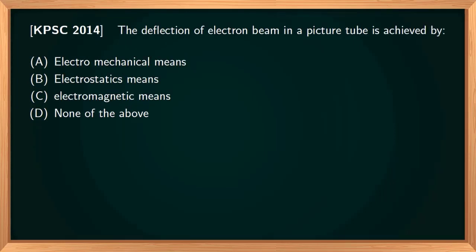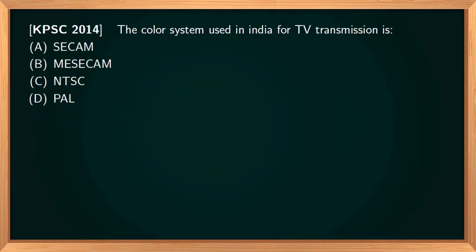The next question: the deflection of electron beam in a picture tube is achieved by — option A: electromechanical means, option B: electrostatic means, option C: electromagnetic means, option D: none of the above. The correct answer is option C — electromagnetic means. This question is asked in Kerala PSC 2014.